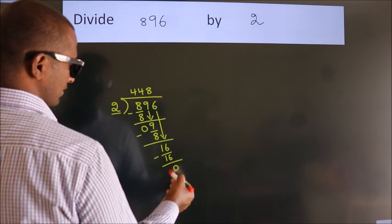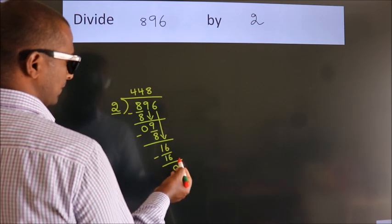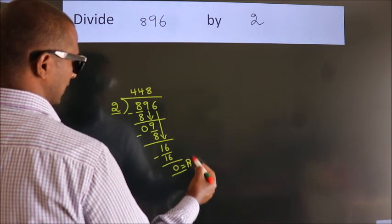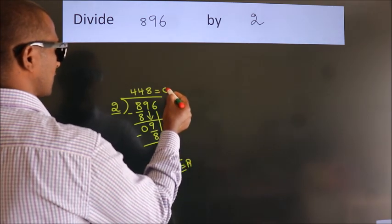After this, no more numbers to bring it down. So we stop here. This is our remainder. This is our quotient.